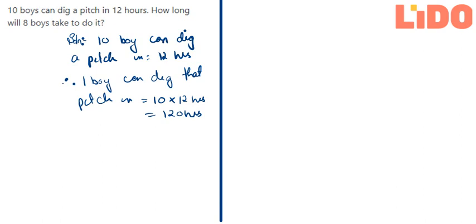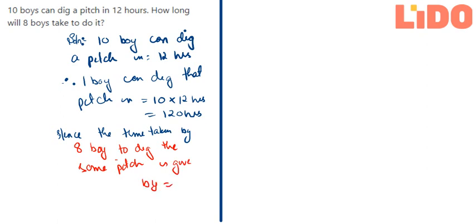So in order to find this answer, let us write this sequence. Hence the time taken by 8 boys to dig the same pitch is given by 120 divided by 8.